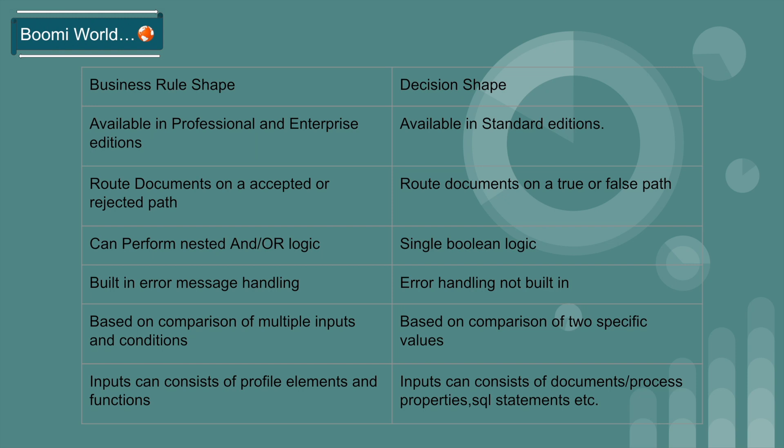In Business Rule Shape, inputs can consist of profile elements and functions. In Decision Shape, inputs can consist of documents, process properties, SQL statements, stored procedures, etc. Business Rule Shape is more complex to build, while Decision Shape is simple to configure.